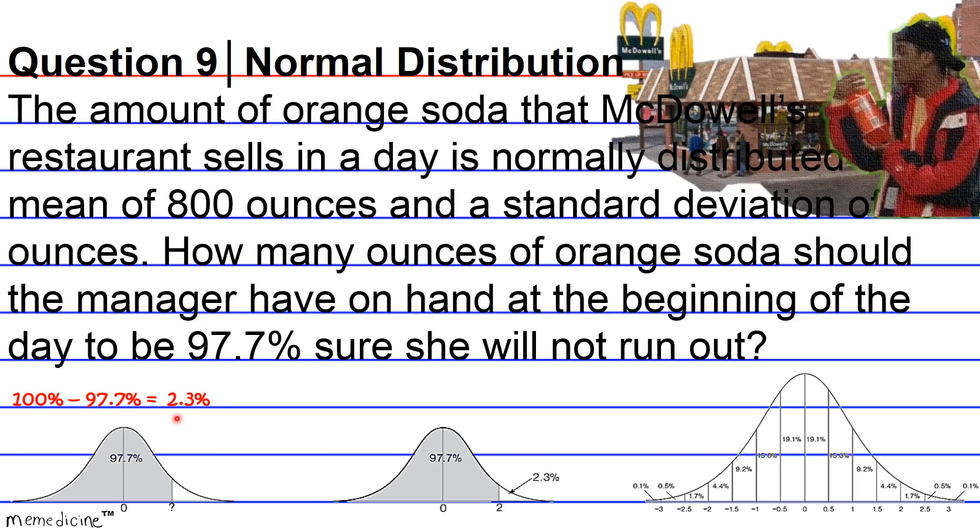The fastest way to calculate this 2.3% probability of running out that we're interested in is to just simply add the last three confidence intervals on the right. So for the first one, we get 0.1% plus 0.5% plus 1.7%. And you'll realize that when you get 0.1% plus 0.5%, which gives you 0.6%, plus 1.7%, you've already hit your 2.3% mark. So this is a 2.3% chance of running out of orange soda.